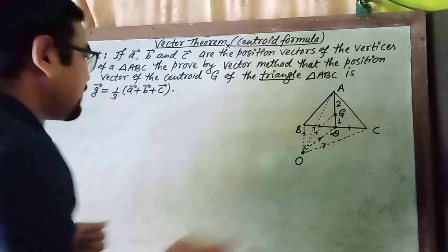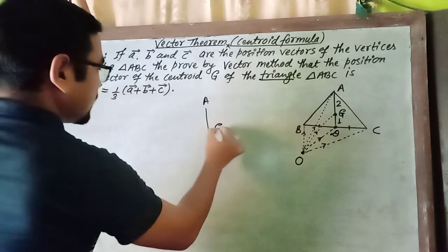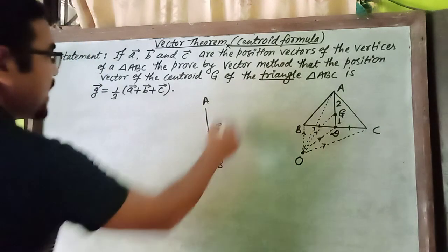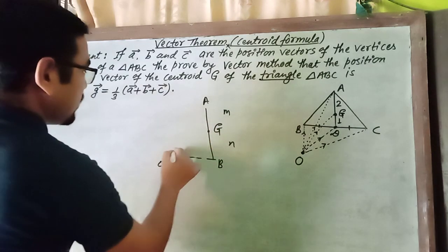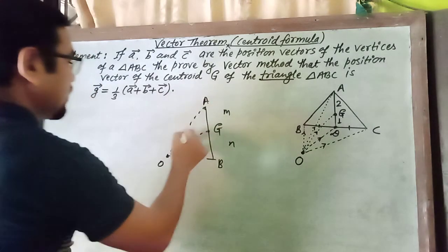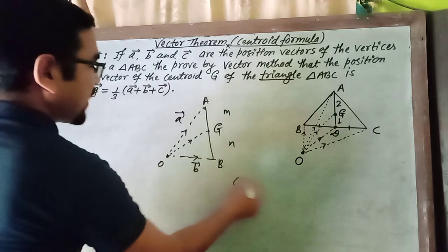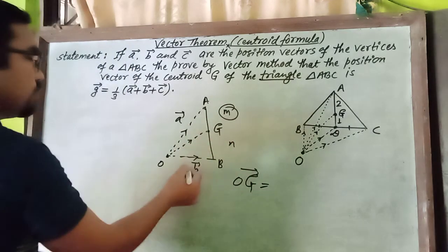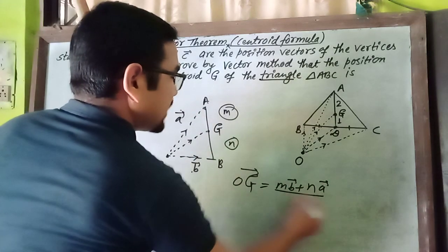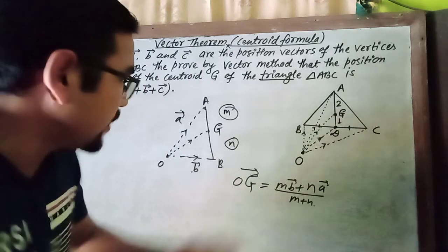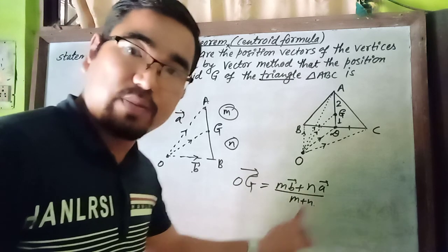You know the section formula for internal division: if a point G divides line AB in the ratio M:N, with external origin O giving position vectors OA and OB, then OG vector = (M · OB vector + N · OA vector) / (M + N). We can also write: small g vector = (M · b vector + N · a vector) / (M + N).